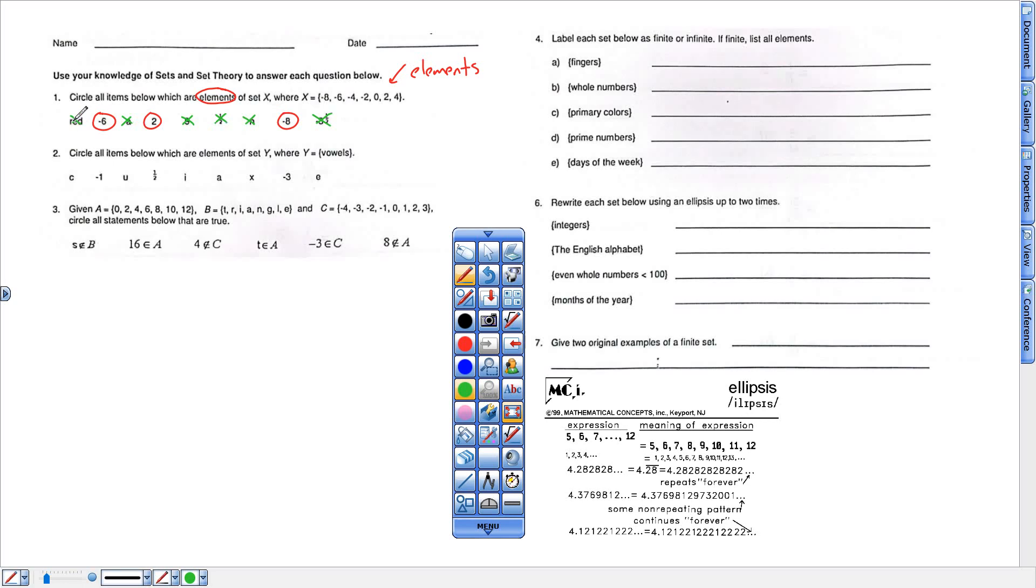All right, this one says this set Y, the things inside there, all the elements are vowels. So hopefully I'm not an English teacher, but that's A, E, I, O, U, sometimes Y, I guess. But here we go. If those letters are not one of those vowels, then it's not an element.